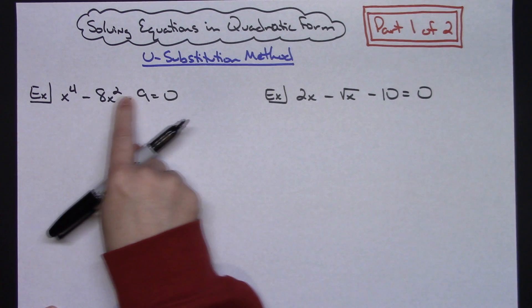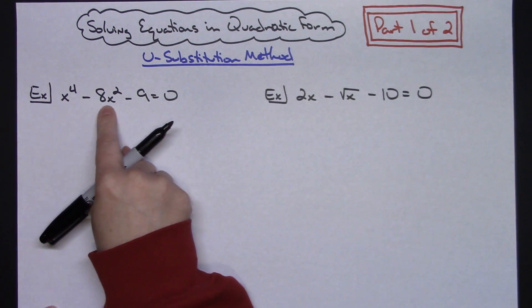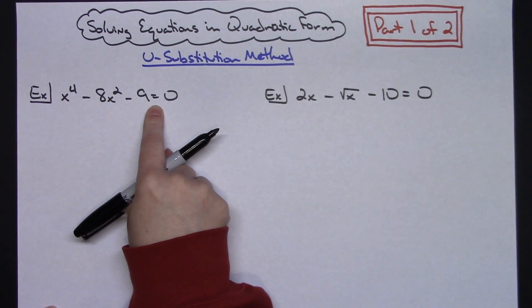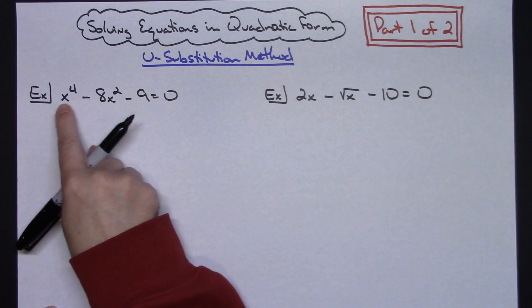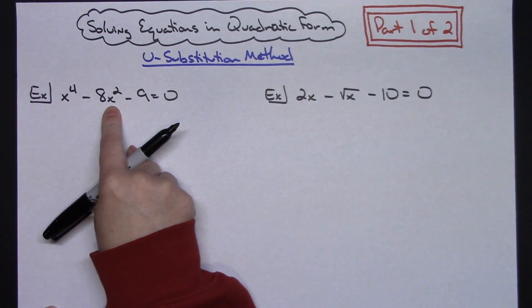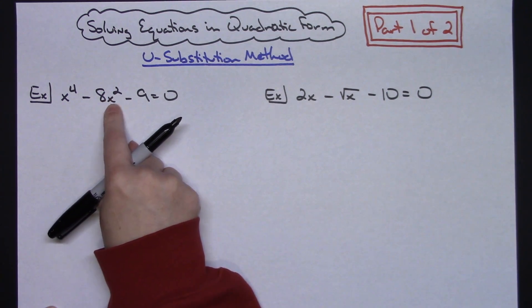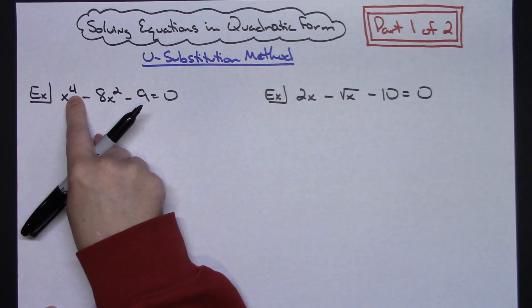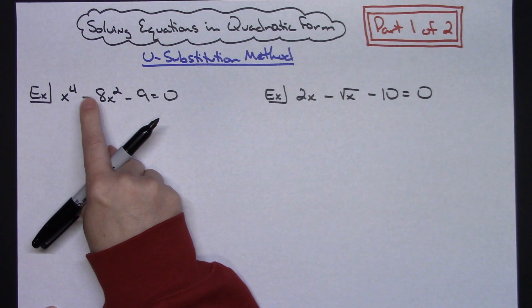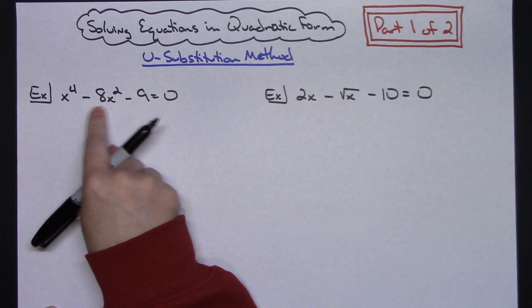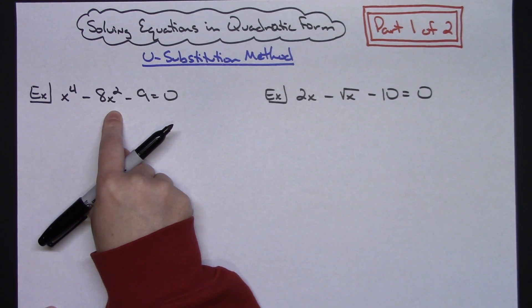So the first thing I'm going to do here in this first example, I've got x^4 - 8x^2 - 9 = 0. I'm going to take a look at these first two terms and focus on the exponents. If my middle term's exponent is half of my first term, then I know this is going to set up really nicely for a u-substitution because I'm going to be able to put it into a nice quadratic that can factor.